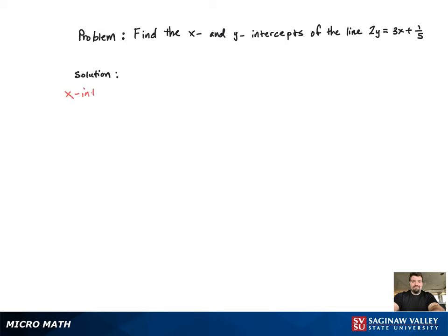We're first going to start with the x-intercept, so that means y is going to equal 0. So we plug that in, and then we have to solve for x.